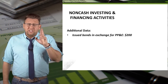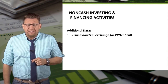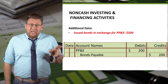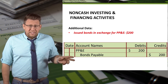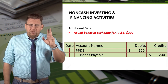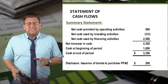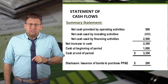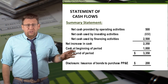One final disclosure relates to non-cash investing and financing activities. Recall that our example company issued bonds in exchange for property, plant, and equipment. The journal entry doesn't involve the cash account, so this transaction won't be included in the calculations of the statement. But it is still reported as a disclosure item — significant non-cash investing and financing activities are disclosed on the statement of cash flows, as shown here.